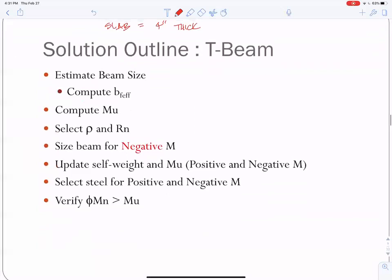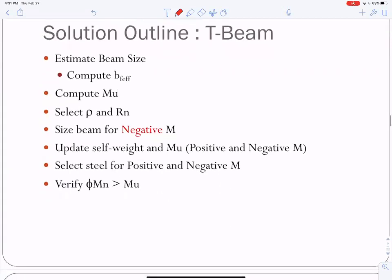Here's the outline for the T-beam now. We're going to estimate the beam size, then calculate B effective, or B flange effective. You'll see that when we get there. Calculate the moment. Select rho and Rn. I'm going to pick halfway between max and min, just read that off the table.